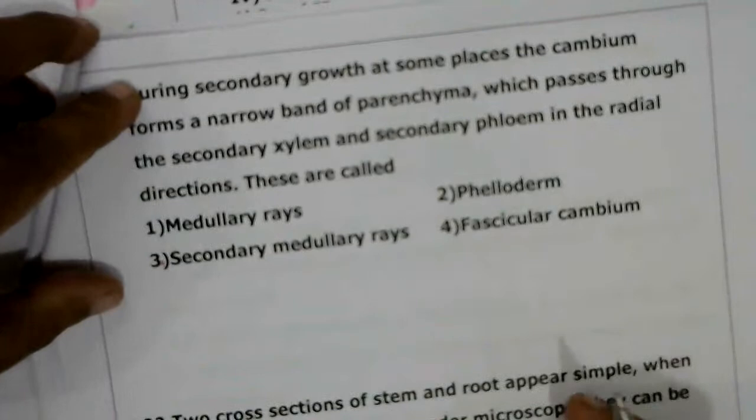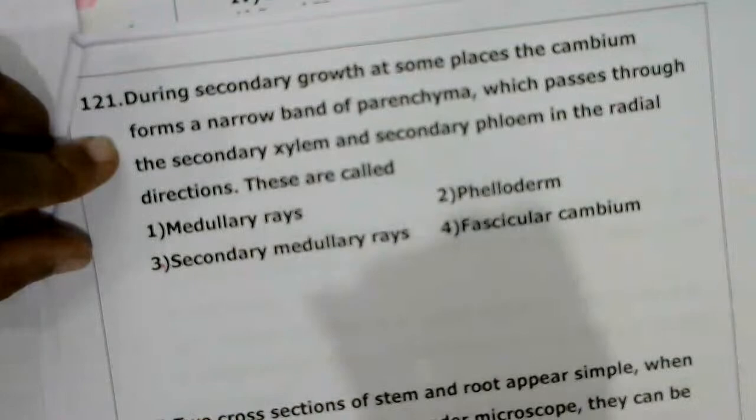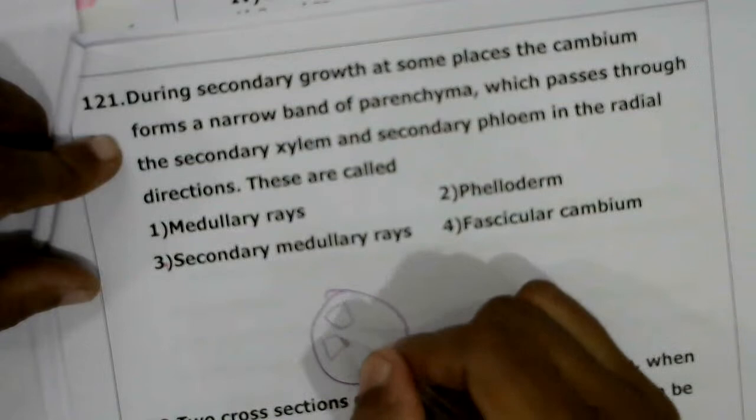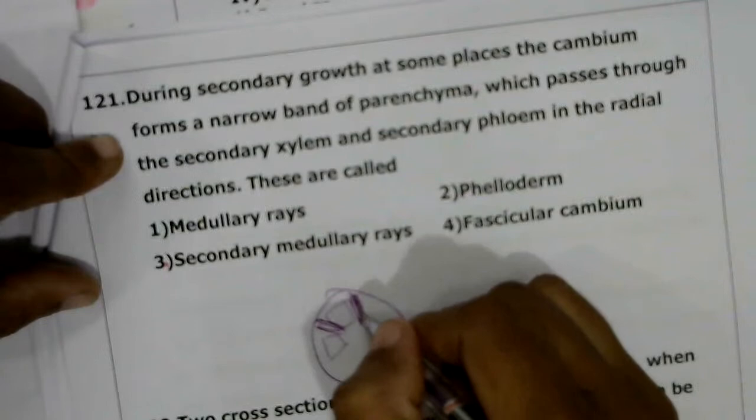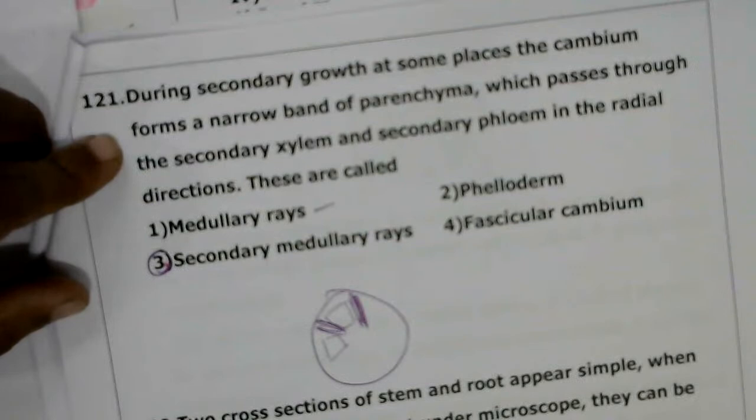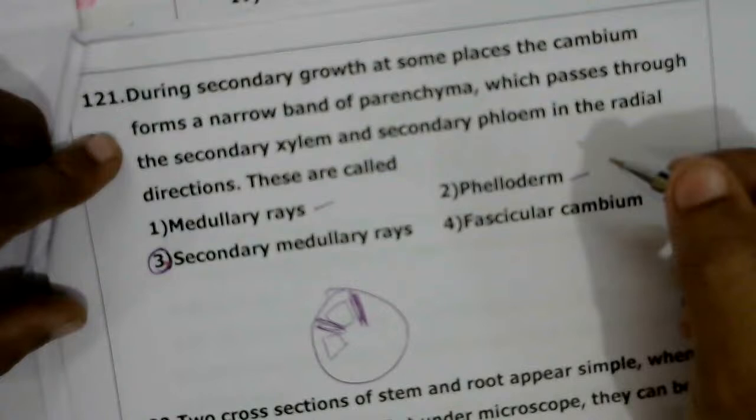Next question: during secondary growth, at some places the vascular cambium forms a narrow band of parenchyma passing through secondary xylem and secondary phloem in the radial direction. These are called secondary medullary rays. Primary medullary rays or simple medullary rays are found in the primary structure. Phelloderm is the secondary cortex. Fascicular cambium is the meristematic tissue found in the fascicular region. The correct answer is the third option.